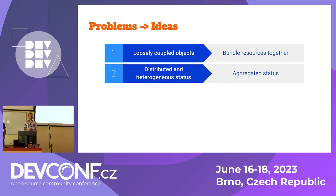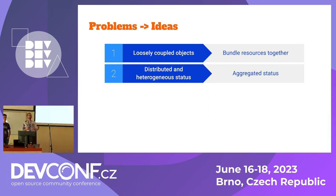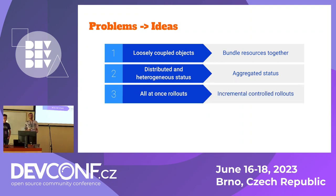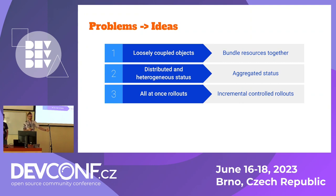Second, the status of all these coupled objects is distributed and heterogeneous, so it's hard to understand. It takes time to see if a deployment succeeded and all the other resources. What if instead we had an aggregated status for this bundle of objects that tells us if the update actually worked? Third, all-at-once rollouts: you push all the resources together and let Kubernetes do the reconciliation, but sometimes this is not enough. What if we could have incremental controlled rollouts — deploy the DB first, if it works deploy the API, and if that works deploy the UI?